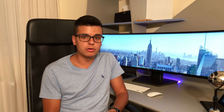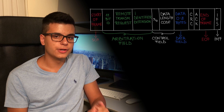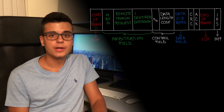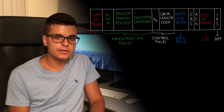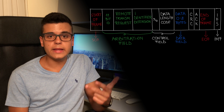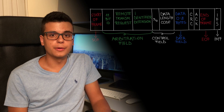Moving on to the data link layer, here we have the structure for a CAN message which is made out of the following parts: start of frame, arbitration field, control field, data field, CRC or cyclic redundancy check, acknowledge field, end of frame, and an intermission field.